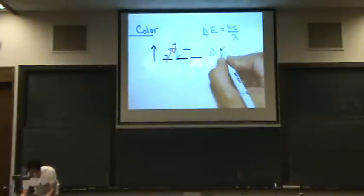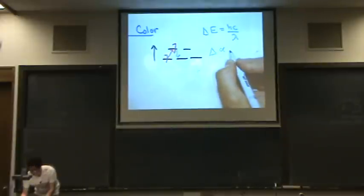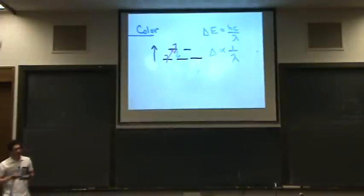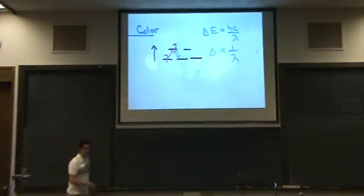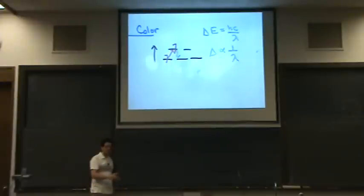And I'm just going to say this is proportional to one over the wavelength. Because h and c are constant, so I'll just say proportional to. What that means is if energy is high, wavelength is low, or vice versa. If wavelength is low, energy is high.